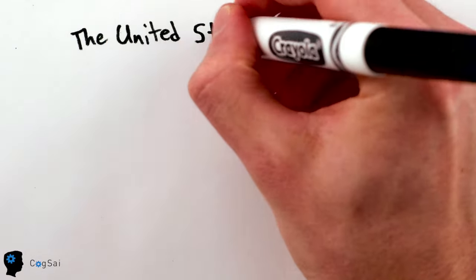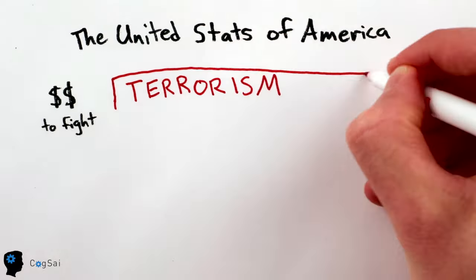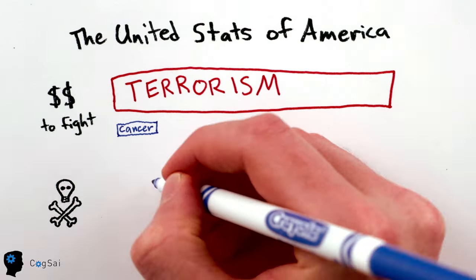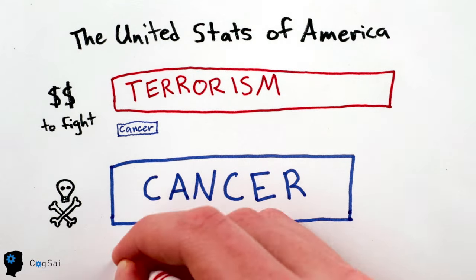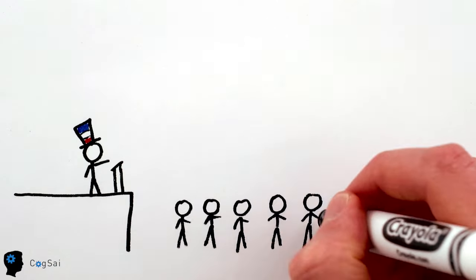We can see this same effect happening in public policy. Americans spend 25 times more money fighting terrorism than fighting cancer, even though cancer kills almost 2,000 times as many people.